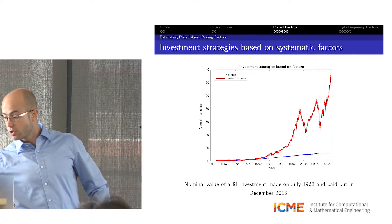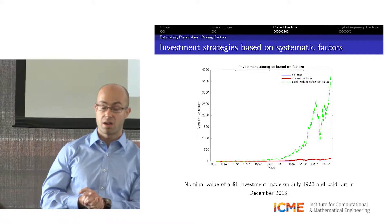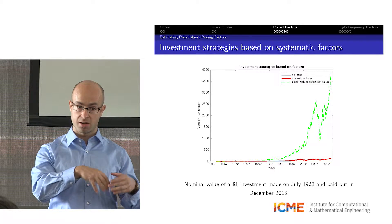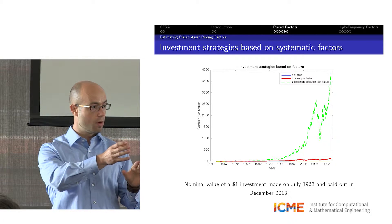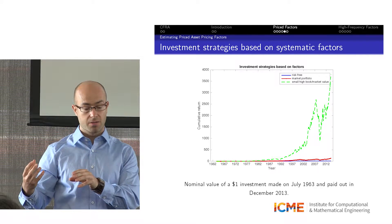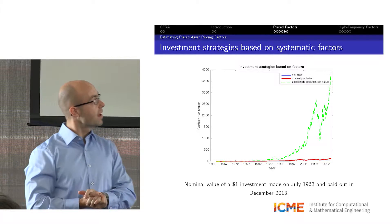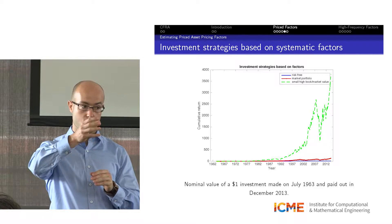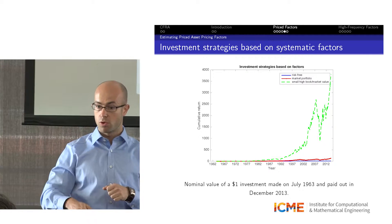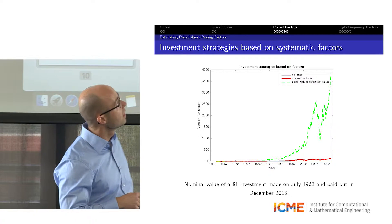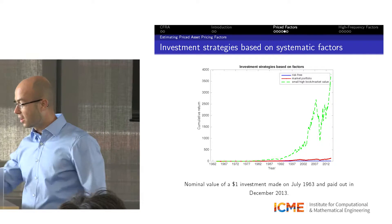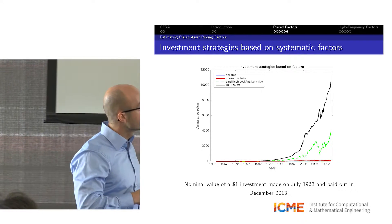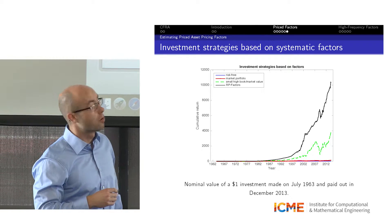Fama and French showed that company size and the book-to-market ratio are important risk factors. Size is measured by market capitalization, and the book-to-market ratio is the accounting value relative to market value. If you take a portfolio of small firms and undervalued firms — those with a high book-to-market ratio — and readjust your portfolio every year, starting with one dollar, after 50 years you have $3,500. If you use the factors I am estimating, you would end up with around $11,000 after 50 years.